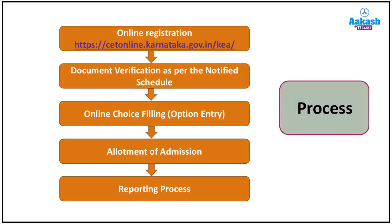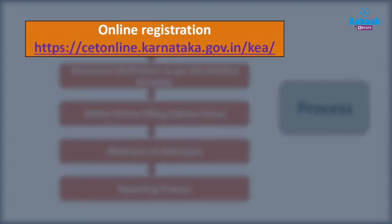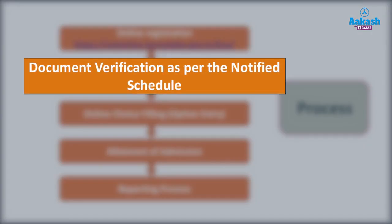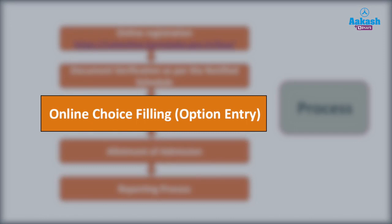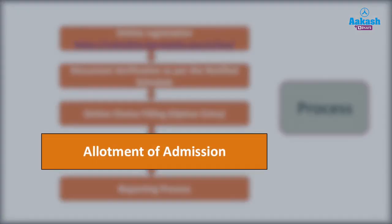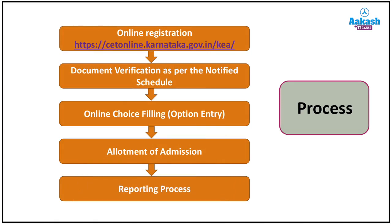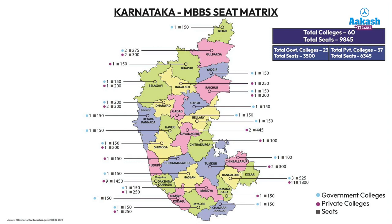Post eligibility, it is important to understand the step-by-step process. For online registration, go to cetonline.karnataka.gov.in/kea/. Then proceed to document verification as per the notified schedule. Further, online choice filling is an important step where you fill the choices of your liking. After that, seat allotment takes place and you need to participate in the reporting process based on the information given on the official website.